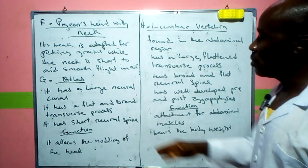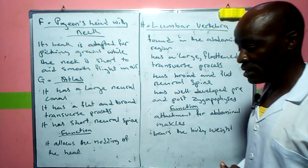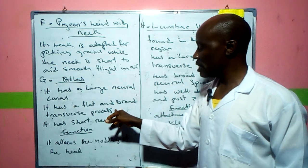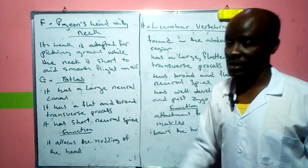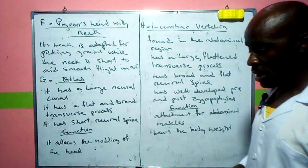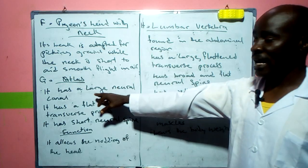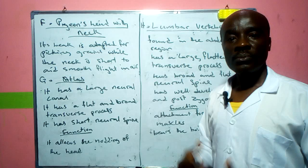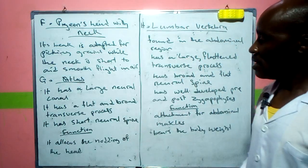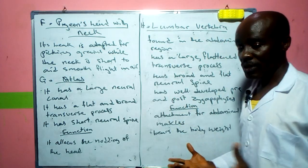Key differences between the atlas and lumbar vertebra: the neural canal of the atlas is very large while the lumbar's is not as large. The centrum is absent in the atlas but is large and prominent in the lumbar vertebra. Also, metapophyses are not present in the atlas but are present in the lumbar vertebra.